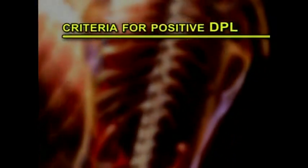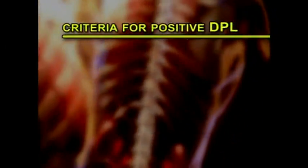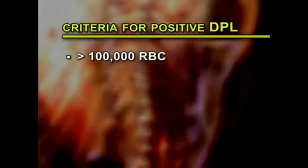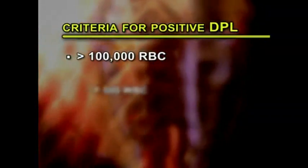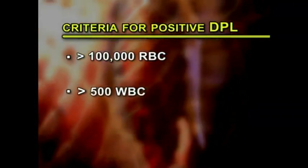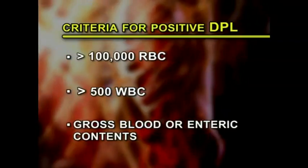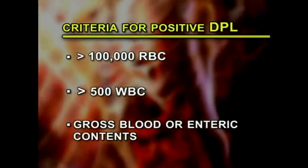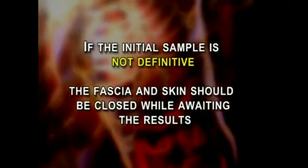The criteria of a positive DPL for blunt trauma are greater than 100,000 red blood cells, greater than 500 white blood cells, or gross blood or enteric contents. If the initial sample is not definitive, the fascia and skin should be closed while awaiting the results.